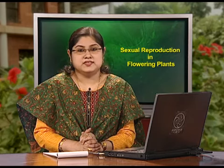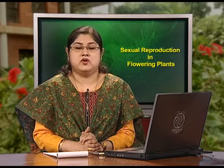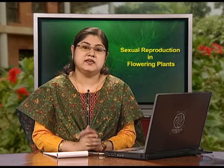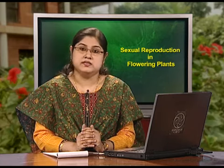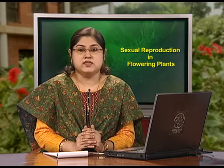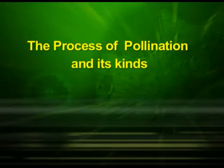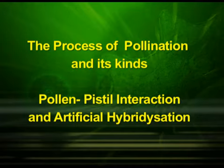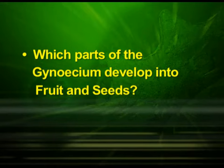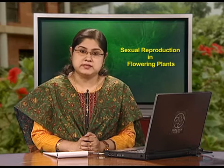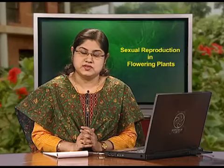With this, we have come to the end of the second part of this lesson on sexual reproduction of flowering plants. We have discussed the structure and development of the megasporangium or the ovule and the embryo sac along with its types. In the next episode, we will focus on the process of pollination and its kinds, pollen-pistil interaction, and artificial hybridization. The point for thinking for this part of the lesson is: which part of the gynoecium develops into fruit and seeds? Thank you.